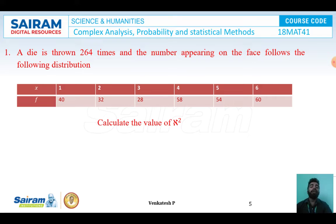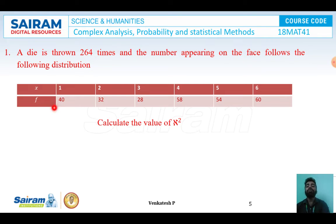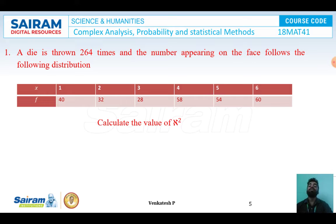To calculate chi-square, we first need observed frequency and expected frequency. The observed frequency O_i from the given data is: 40, 32, 28, 58, 54, 60 for x = 1, 2, 3, 4, 5, 6 respectively. Now our job is to calculate the expected frequency.